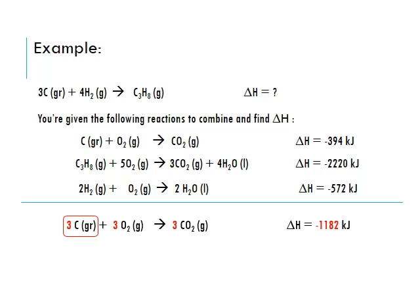Next, we need 4 hydrogen molecules. Since we've used the first reaction, we look at the second and third. Hydrogen is in the third reaction with a coefficient of 2, on the correct side as a reactant. We need a coefficient of 4, so we multiply that reaction by 2. The new coefficients become 4, 2, and 4, and we multiply the change in enthalpy by 2 as well — going from negative 572 to negative 1,144 kilojoules. We put a box around the hydrogen.